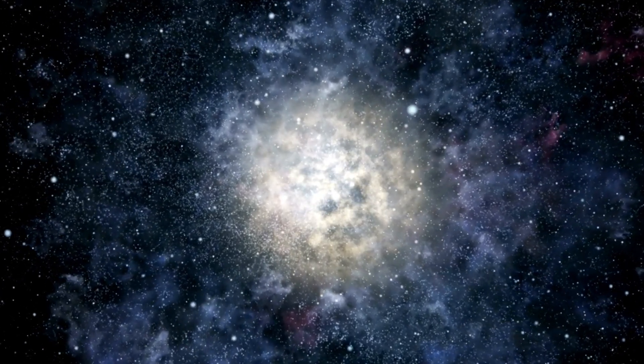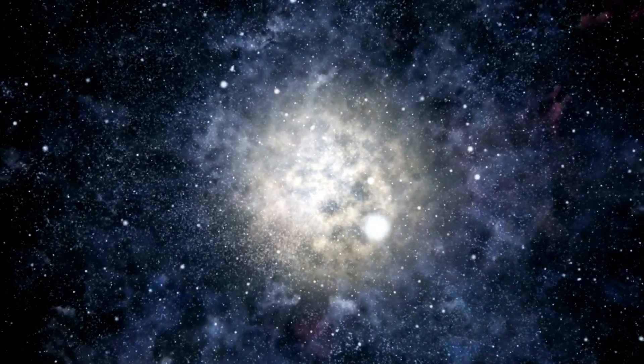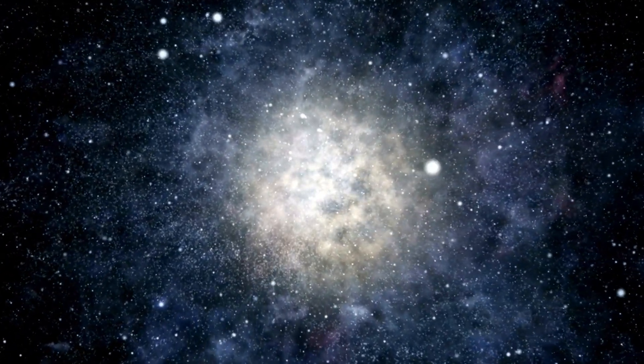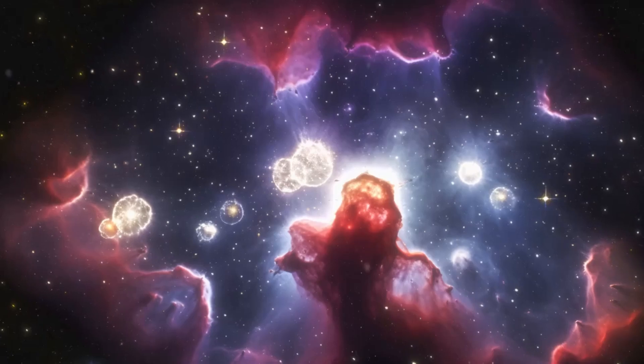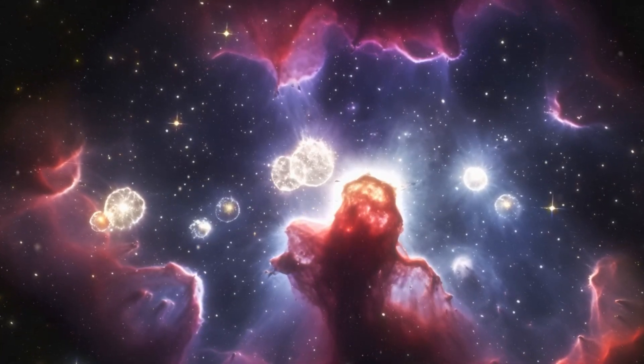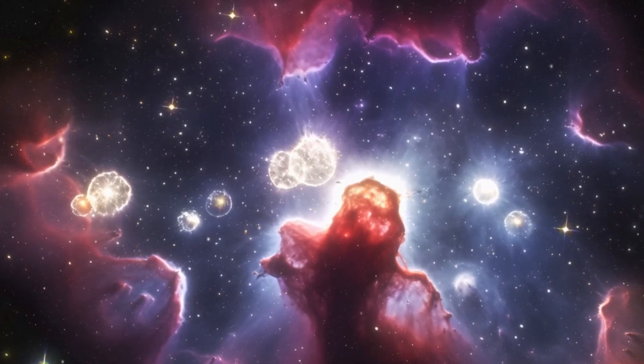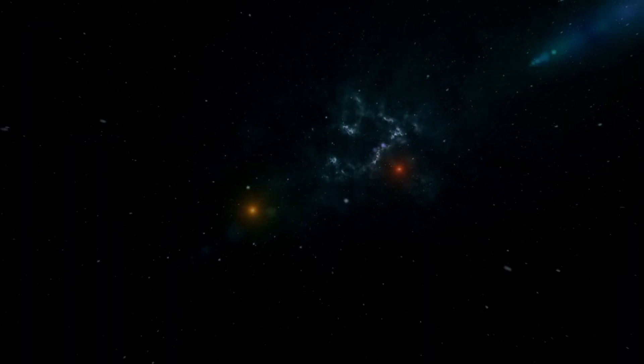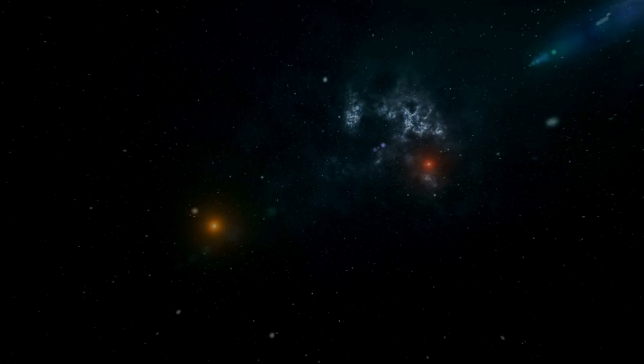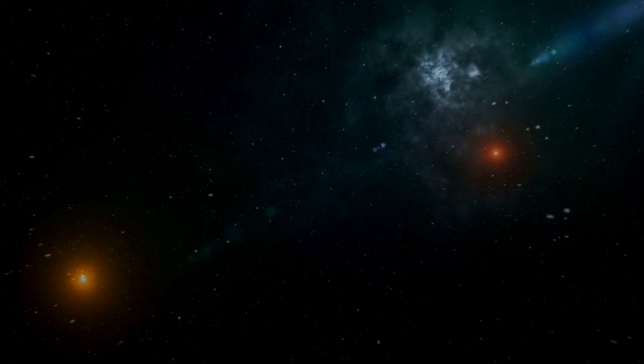However, they can also exhibit intense stellar flares that might pose challenges for any potential life on nearby planets. The habitability of Proxima B is still debated. Despite being in the right zone, it might lack a stable atmosphere, essential for protecting potential life from harmful radiation and temperature extremes. Proxima B's intense exposure to ultraviolet radiation from its star could strip away vital elements like hydrogen, nitrogen, and oxygen, making conditions harsh.